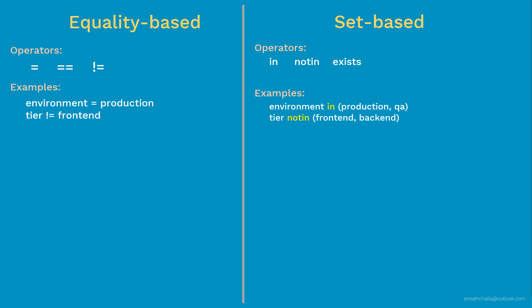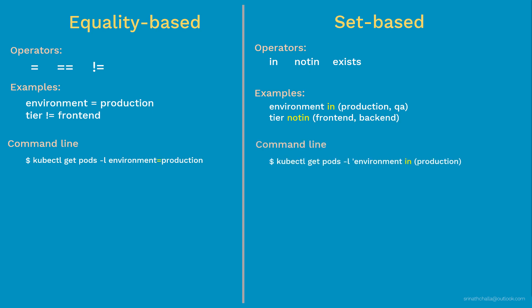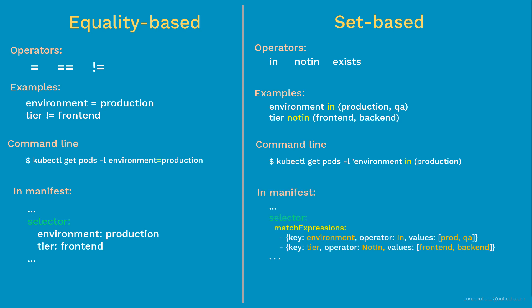How are these selectors used with the kubectl command? In these examples, we are selecting and displaying all pods whose environment is production — using the equal operator on one side, and the 'in' operator on the other side. How are these defined in a manifest or spec file? On the equality-based side, it is simple: define the keyword 'selector' and copy the exact pod label content underneath. On the set-based side, we use 'matchExpressions' under the selector, then specify key, operator, and values.